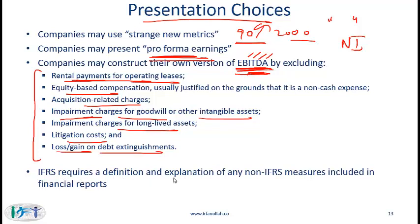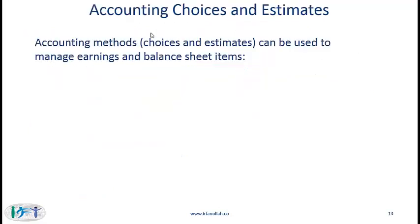IFRS requires a definition and explanation of any non-IFRS measure included in financial reports. So if there is a new version of EBITDA or operating income that is a non-IFRS measure, IFRS says those measures need to be very clearly explained in the financial reports. Similarly, US GAAP says that anytime non-GAAP measures are used, the closest GAAP measure must also be given and presented with equal prominence.